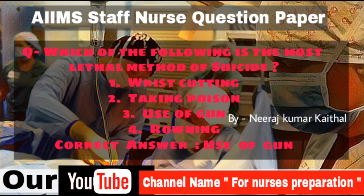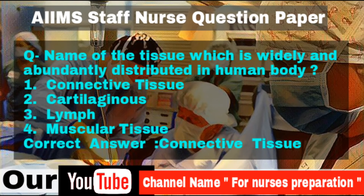Question: Which of the following is the most lethal method of suicide? Options: Wrist cutting, taking poison, use of gun, hanging. Correct answer is use of gun. Question: Name the tissue which is most widely and abundantly distributed in the human body. Options: Connective tissue, Cartilaginous, Lymph, Muscular tissue. Correct answer is Connective tissue.